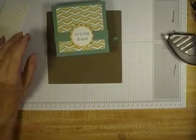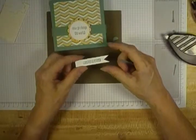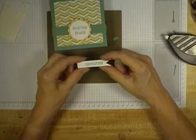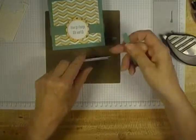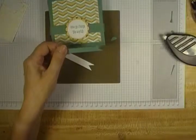And then from the same stamp set Something to Say, I've stamped congratulations on a, I think it's about a half inch strip of cardstock, and just cut myself a little banner. And another piece of the Lost Lagoon.